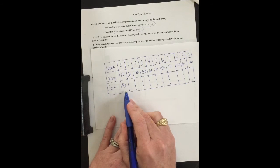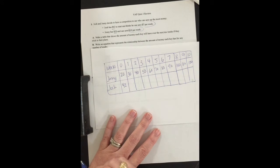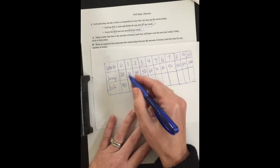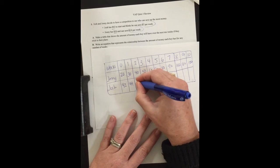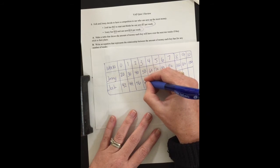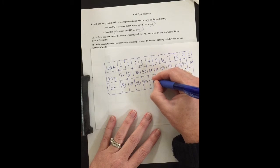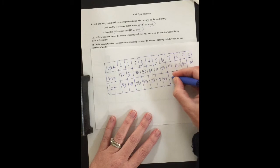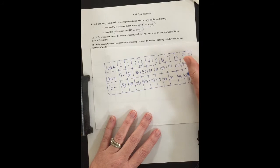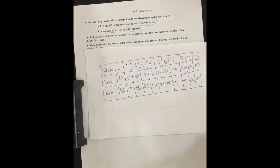For Josh, it says he started with $42 and he can save $7 per week. So after week one, he'll have $49 because he saved seven more. If he saves seven more, he'll be at $56, and then $63, 70, 77, 84, 91, 98, 105, and $112. Alright, so we have our table.